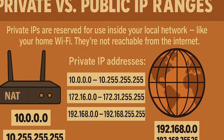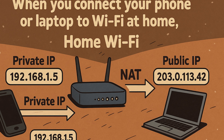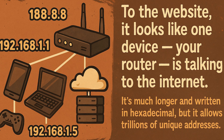One area people trip on in the exam is private versus public IP ranges. Private IPs are reserved for use inside your local network, like your home Wi-Fi — they're not reachable from the internet. These ranges include 10.0.0.0–10.255.255.255, 172.16.0.0–172.31.255.255, and 192.168.0.0–192.168.255.255. When you connect to Wi-Fi at home, your router gives you a private IP like 192.168.1.5, then uses Network Address Translation (NAT) to share your single public IP with all your devices.